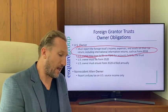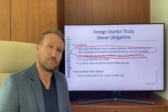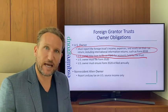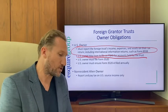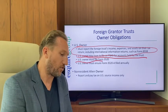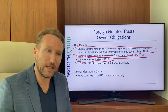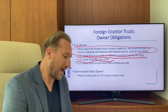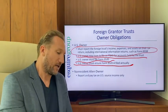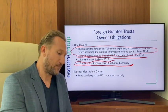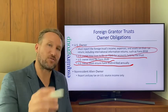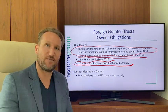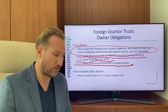They also need to file an FBAR for any foreign financial accounts held by the trust, file Form 3520 with the IRS, and ensure that the 3520-A is filed by the trustee — or file it themselves if the trustee doesn't.